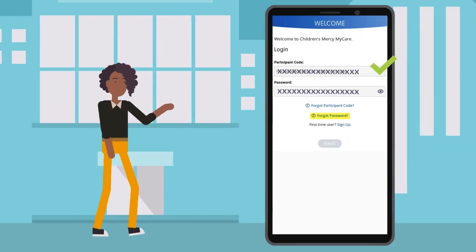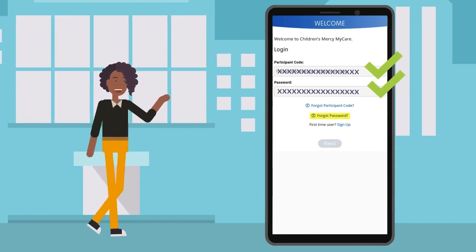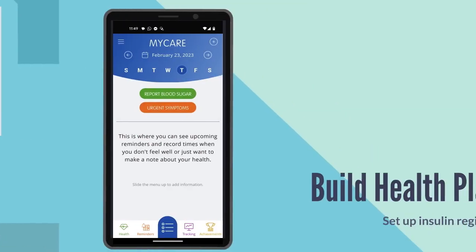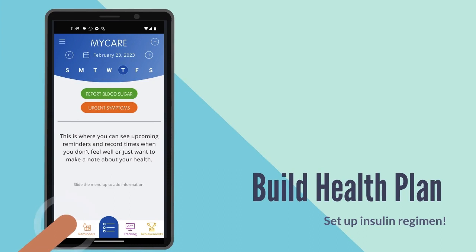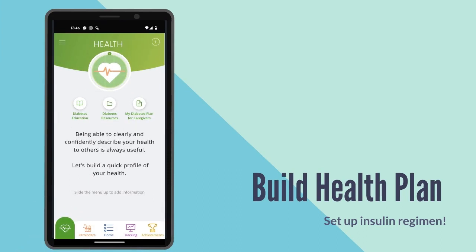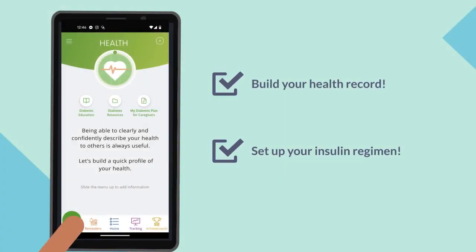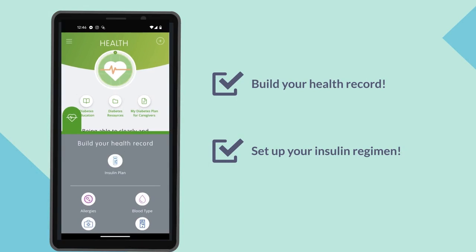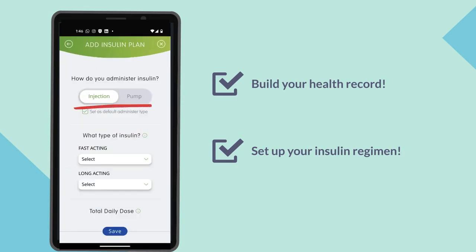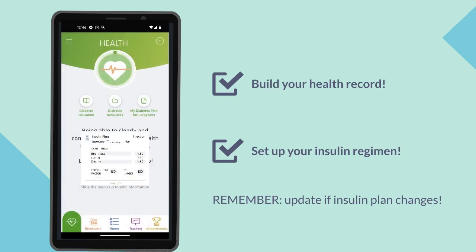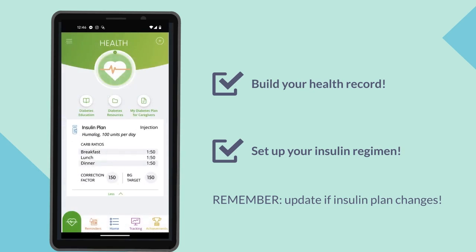Once you've created your ID and password to log in, click on the Health tab to start building your health record. You'll want to set up your insulin regimen first. You will need to choose whether you use an injection or pump so the app will give you correct guidance when entering blood sugars. Don't forget to update if your insulin plan changes. Once completed, your insulin regimen summary will be available on the main health screen.